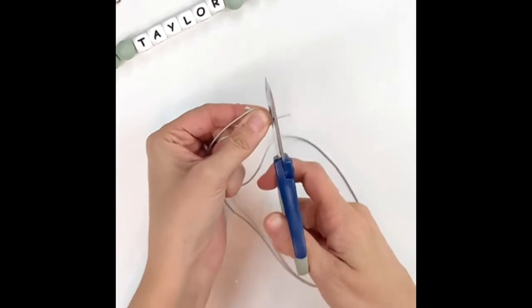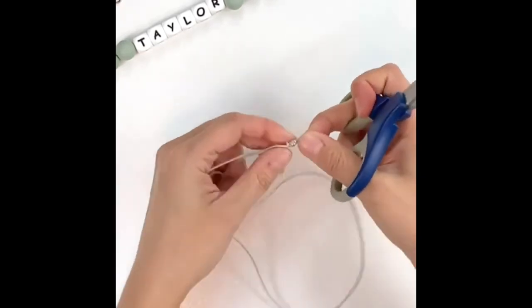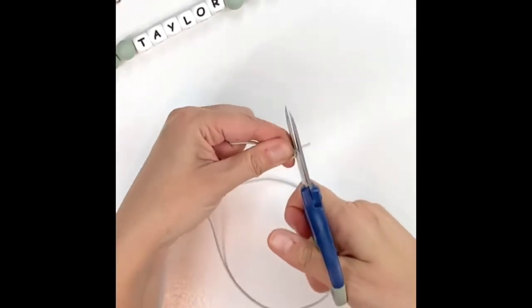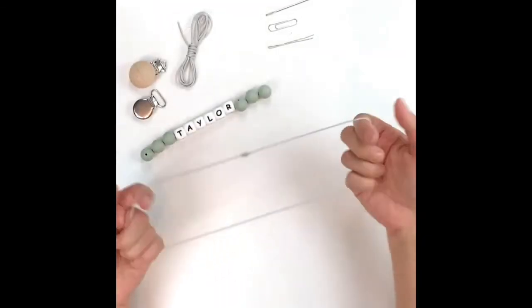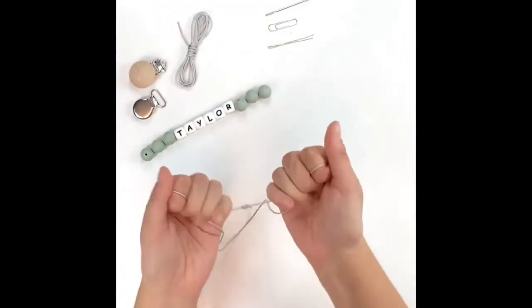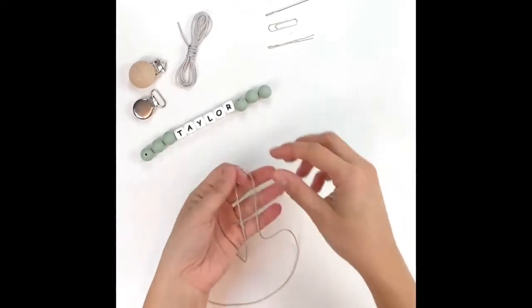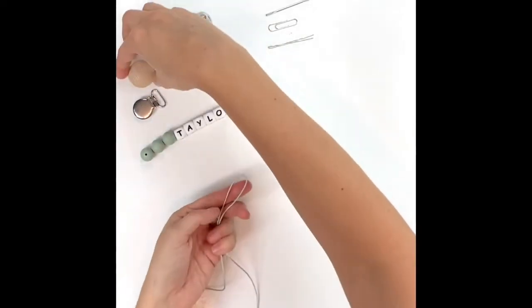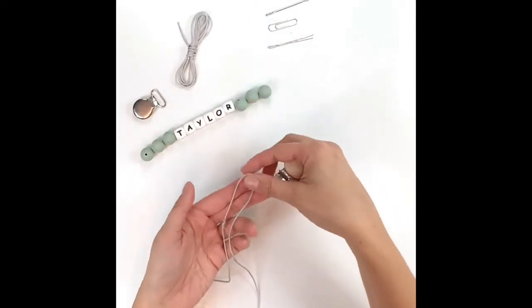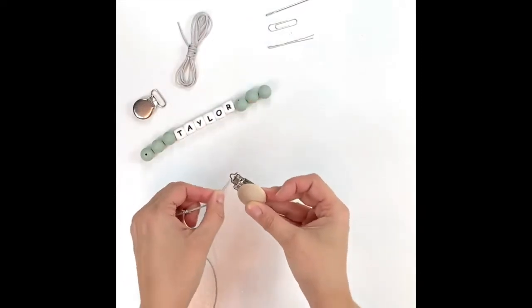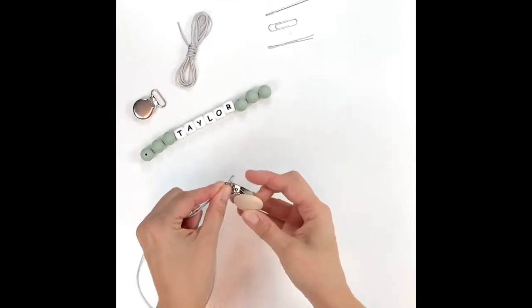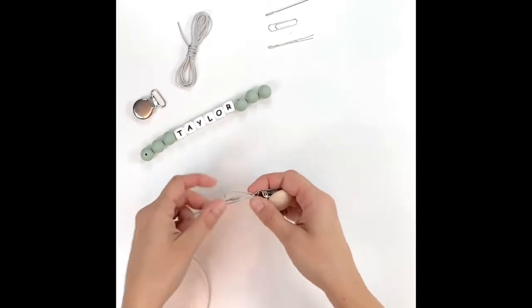Okay, so now we've got our nice secure loop. Like I said, this was really tight. We are going to take it in one hand and I'm going to choose the beechwood clip here. You're going to push this down through the beechwood clip loop and then slide the rest of the loop through.